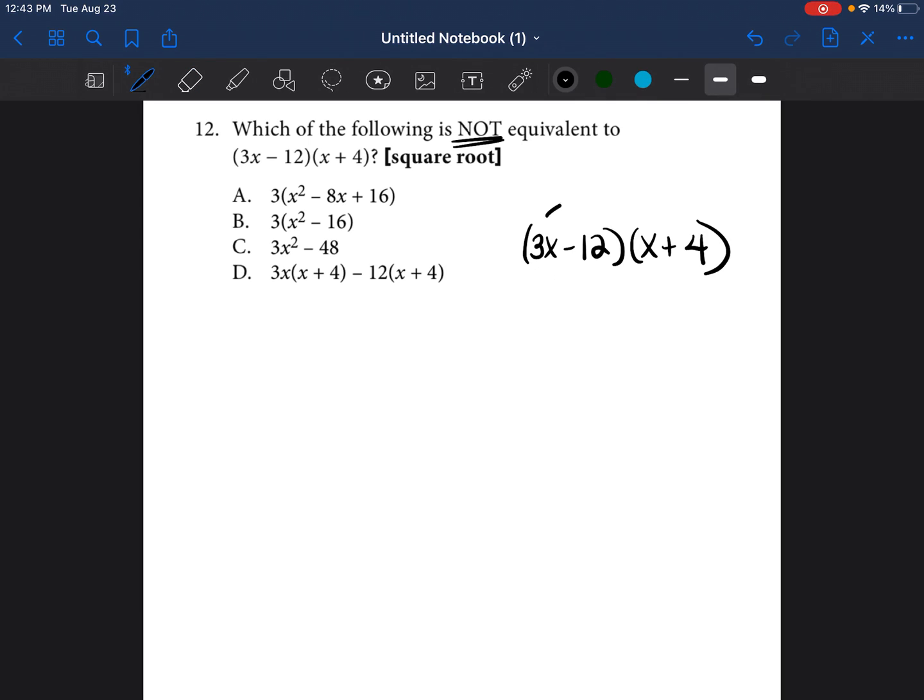So we're going to multiply 3x times x and then 3x times 4. So 3x times x. Whenever you're multiplying exponents, then you're going to go ahead and just add them together. So 3 times that invisible one is just 3. x to the first power times x to the first power would be x to the 2 power or x to the second power. So it would be 3x squared. And then we're going to go ahead and do 3x times 4. So 3x times 4. 3 times 4 is 12. There's nothing to multiply the x by. So 12x. So plus 12x. And so we're done with this 3x.